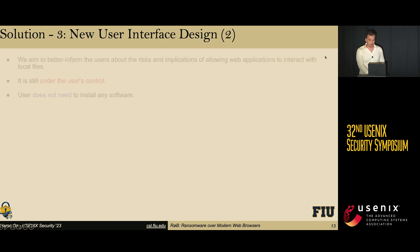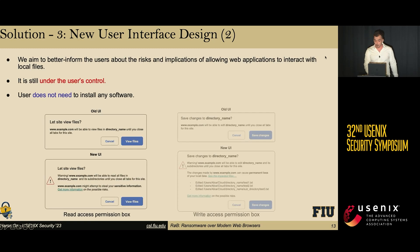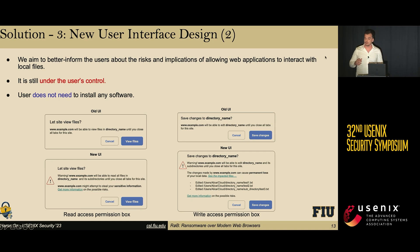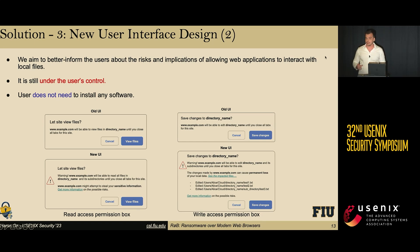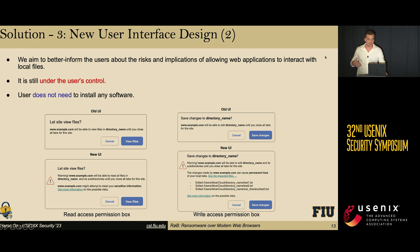So we designed new permission boxes. With these new permission boxes, we aim to better inform users about possible security risks, especially with the FSA API. It is still under the user's control, so an attacker can still trick the user. But this defense solution can easily be integrated into the current implementation of the FSA API, so the user does not need to install any software to use it.